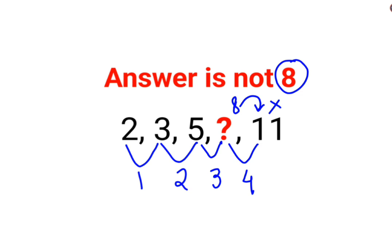Similarly, either people thought that the difference is 1, 2, maybe the difference is getting doubled. So it should be 4. So 5 plus 4 is what? 9. The next difference should have been 8. But 9 plus 8 is 17. It is not even 11.